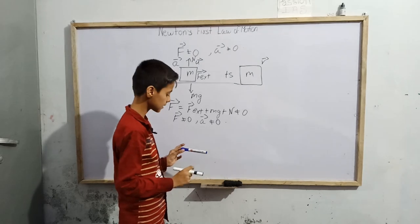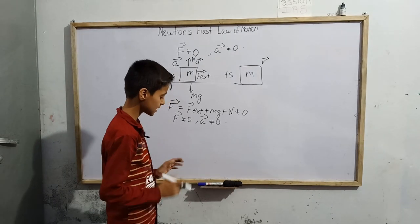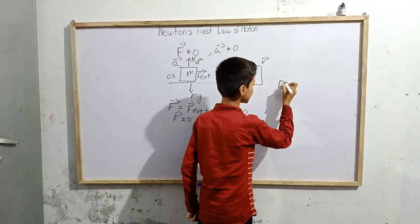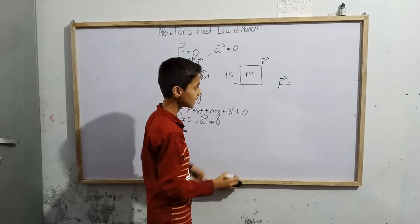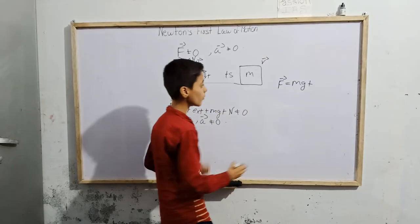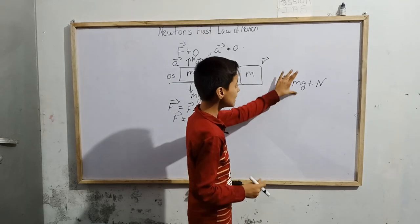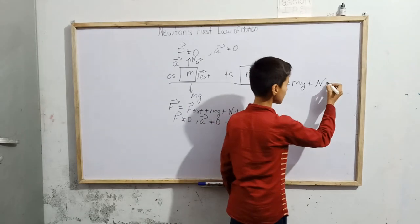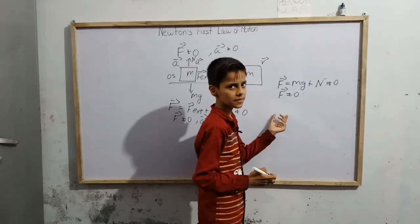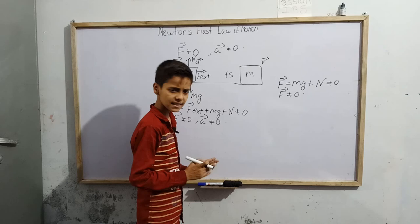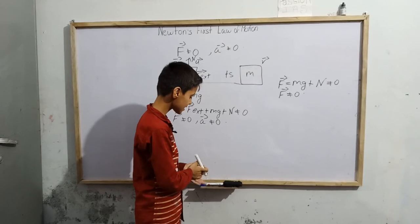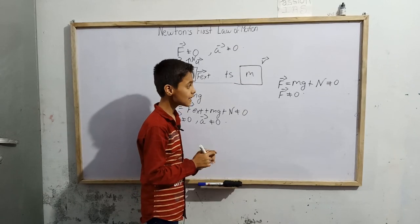Now let us take a different case. If we have a marker placed on a surface, the total forces acting on it are: weight of the marker Mg in the downward direction, and the normal contact force N perpendicularly upward. We are adding these, so the total F is not equal to zero. But we can see there is no acceleration of the marker — it is just in rest position.